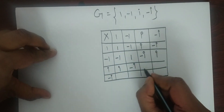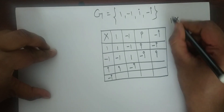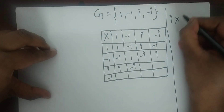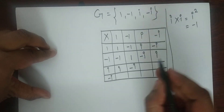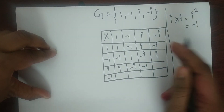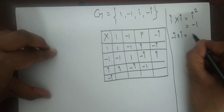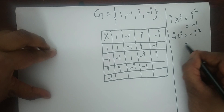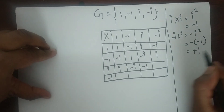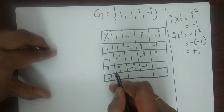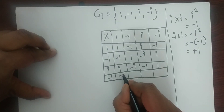i into i is what? i squared. i squared is nothing but -1, so here is -1. -i into i: that is minus i squared. Minus i squared is minus(-1), so minus i becomes +1, so right here 1. Again, -i into -1: here is -i.